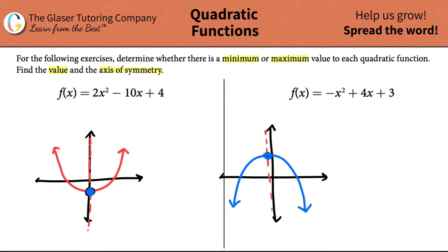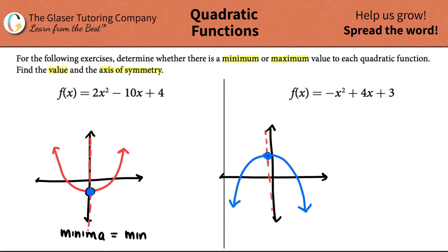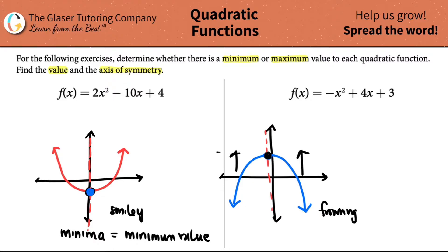When you're smiling, the vertex, which is a point, will be the minimum value of the graph. You can't go any lower than the vertex. So when the quadratic is smiling, you will have a minima, or it's called the minimum value. The frowny one — this is frowning — the vertex is the highest portion of the graph. Can't get any higher than the maxima. So if you have a frowning quadratic function, you have a maxima or a maximum value.